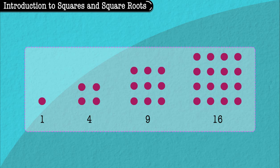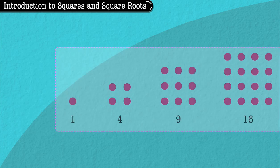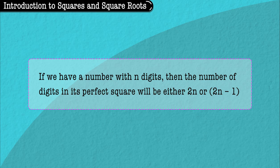These can be represented by dots which form squares as shown. If we have a number with n digits,